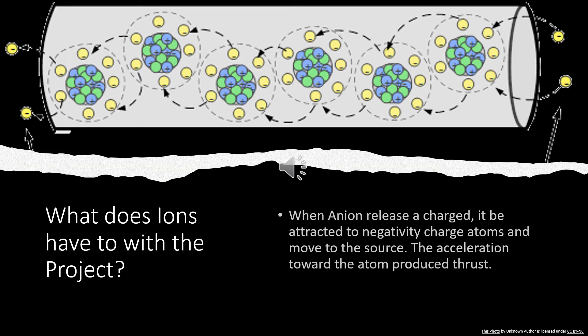Now to explain how ions have to deal with this project. Like I mentioned, when ions were charged and stripped of their electrons, it will be attracted to a negatively charged ion, which is aluminum foil. It'll move down to the source to gain back the electrons to equalize their force. The sudden acceleration will, in turn, produce thrust, which will go in the downward direction, and the craft will only go up.